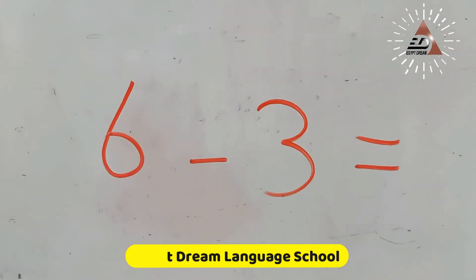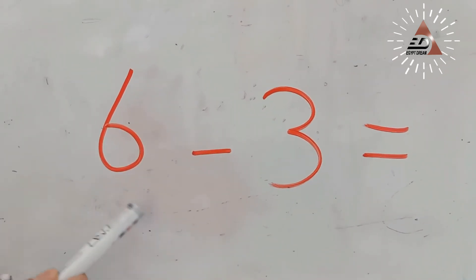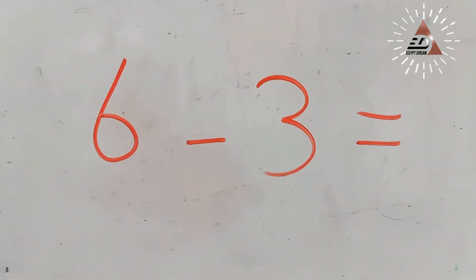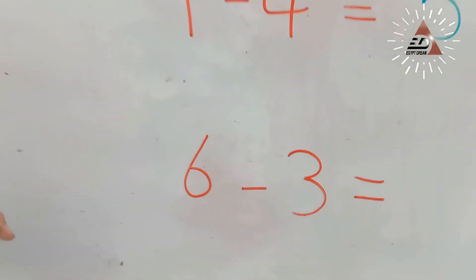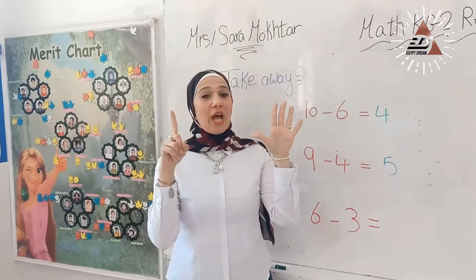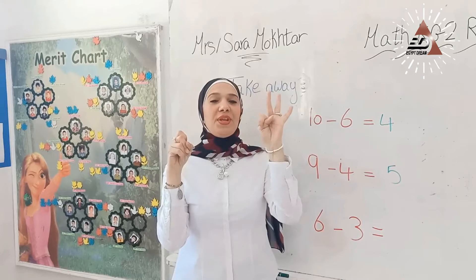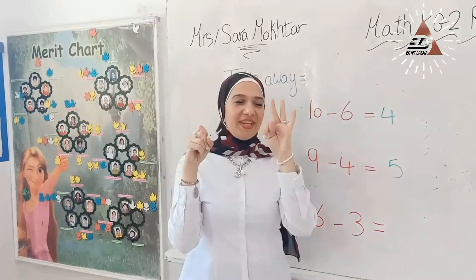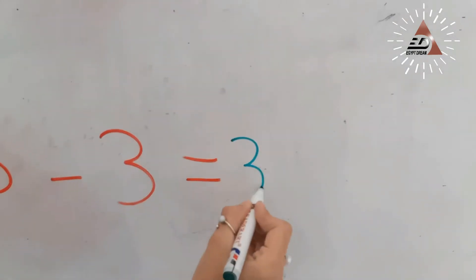Hey KG2. What is this number? 6 minus 3. Which one is the bigger number? Yes, 6. Put 6 on your hand and take away 3: 1, 2, 3. How many fingers are left? Yes, 3. Write number 3.